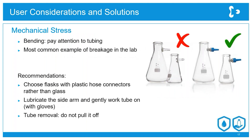A common issue in the lab is broken pieces of glass — for example, filter flask arms which are attached to hoses. We recommend using alternatives to these: for example, plastic tubing with just a glass flask, or a plastic screw thread connector for an Erlenmeyer flask.